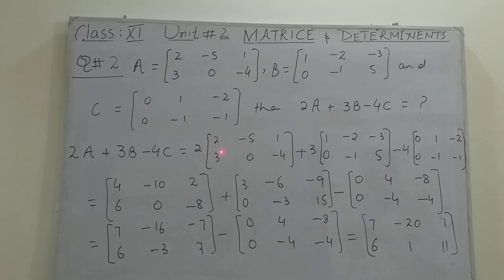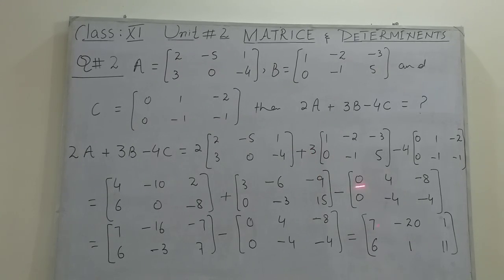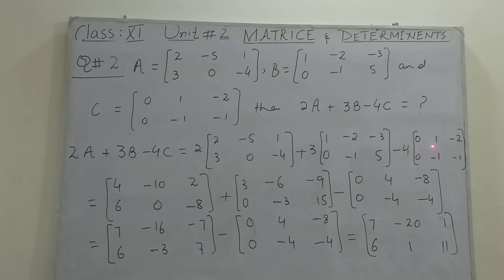We multiply the scalar value inside each element of the matrices. For 2A: two twos are four, two threes are six, two times minus five is minus ten, two times one is two, two times three is six, two times zero is zero, two times minus four is minus eight. For 3B: three times one is three, giving minus six, minus nine, zero, minus three, fifteen. For 4C: multiplying four inside gives zero, four, minus eight, zero, minus four, minus four.